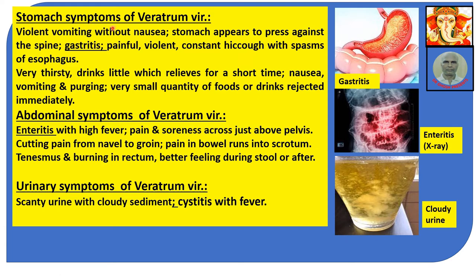Stomach symptoms of Veratrum Viride: violent vomiting without nausea; stomach appears to press against the spine; gastritis — inflammation of the stomach wall. Painful, violent, constant hiccups with spasms of the oesophagus. Very thirsty, drinks little, which relieves for a short time. Nausea, vomiting and purging. Very small quantity of food and drink is rejected immediately — vomited out.